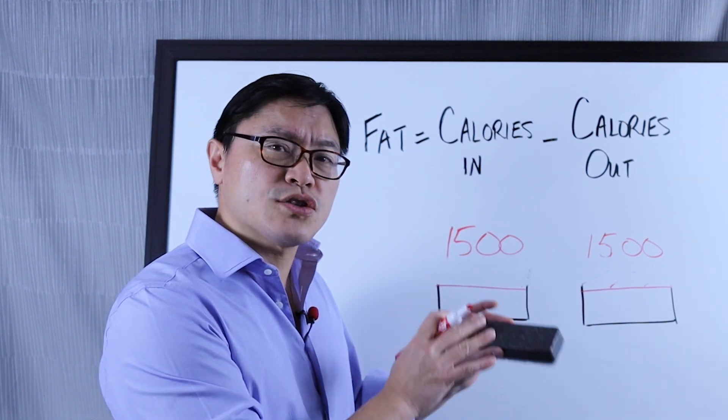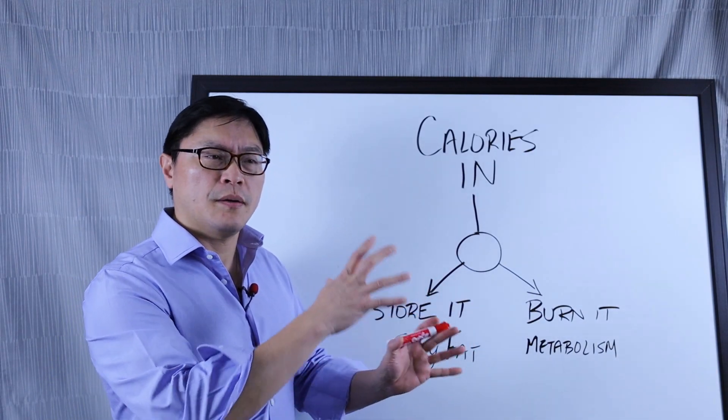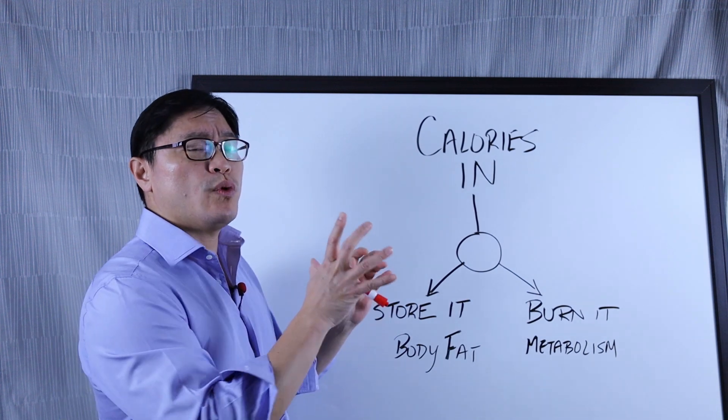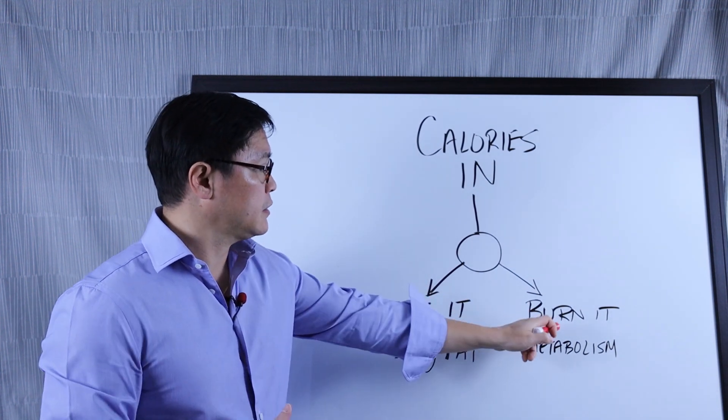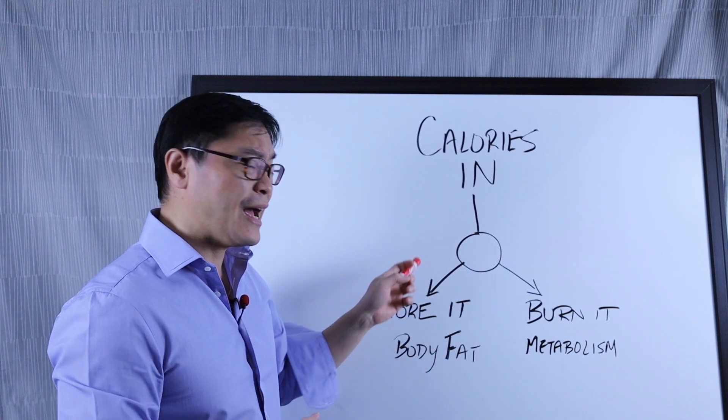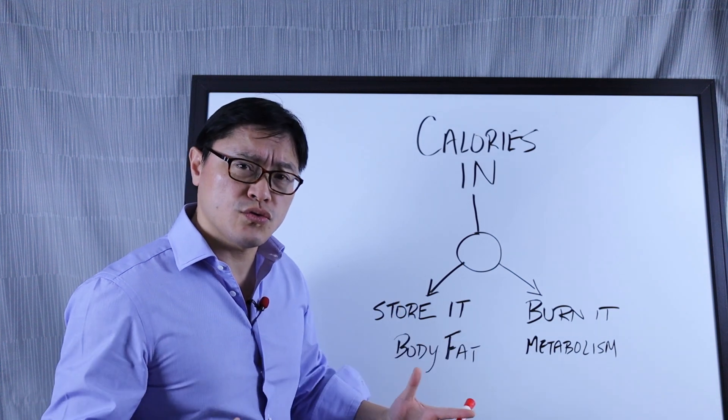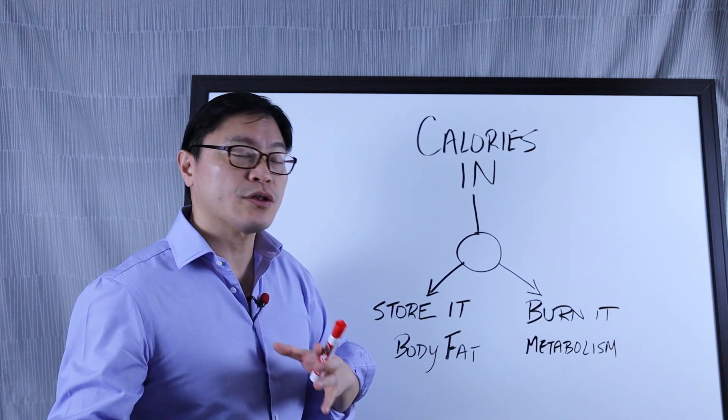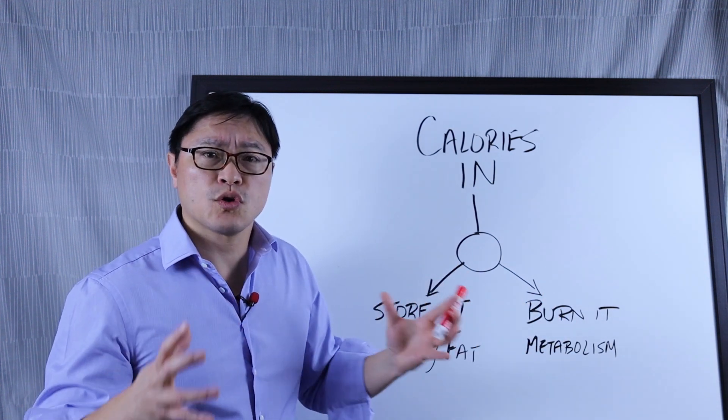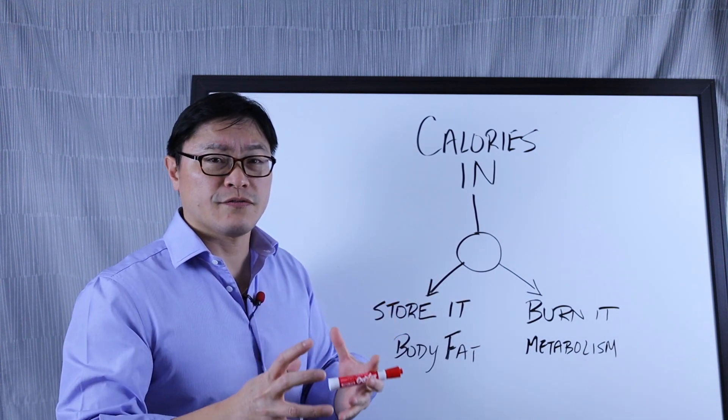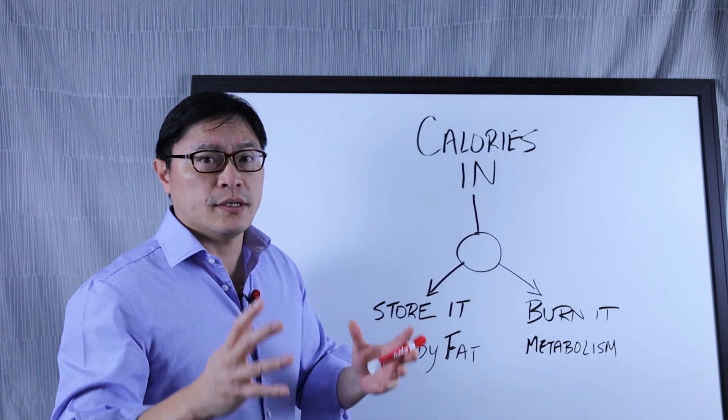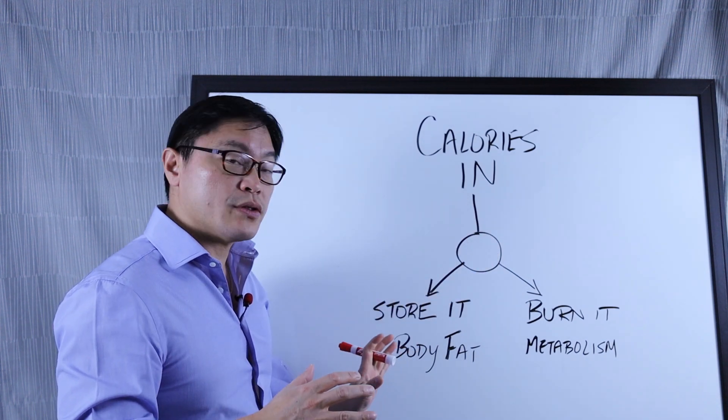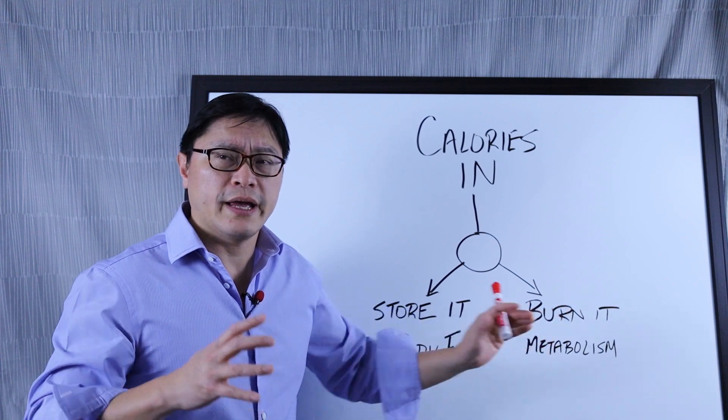Here's the same thing drawn a different way. It's still calories in, body fat which is a way for your body to store calories, and calories out. When your body has calories coming in, it can do one of two things: it can store it as body fat, or it can burn it—that's calories out or your basal metabolic rate. When you eat, your body has a decision to make: should it store this or should it burn it?